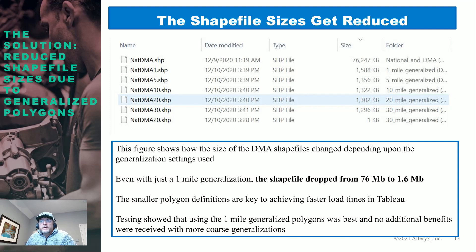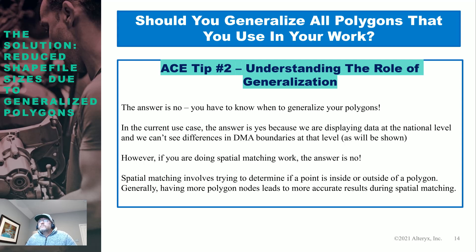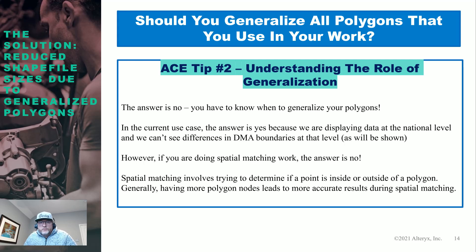I determined that the one-mile generalization was the appropriate one for me, giving me faster load times in Tableau. The question is: should you do this for all your work using polygons? The answer is no. In my case, yes — because I was displaying data at a national level and can't see small differences in polygon boundaries. Generalization works great because it achieves a shorter join time while still giving visually accurate representations of the DMAs.